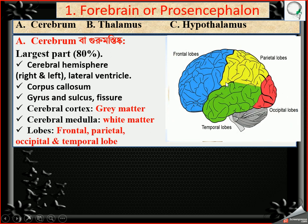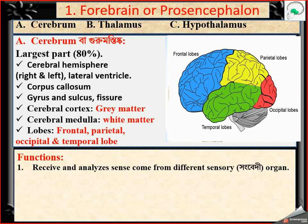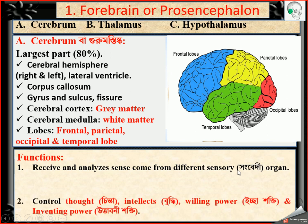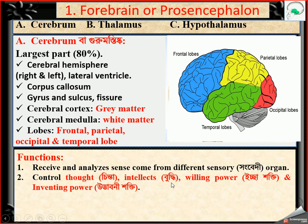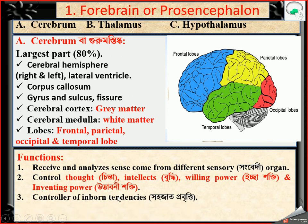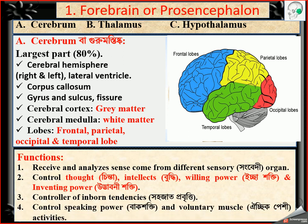Due to fissures, the cerebrum is divided into four types of lobes: the frontal lobe at the front, parietal lobe on the lateral side, occipital lobe at the back, and temporal lobe. The function of the cerebrum is to receive and analyze sensory input from different sensory organs and to control the functions of the body.